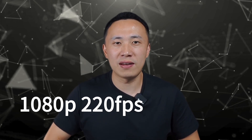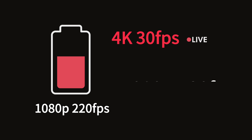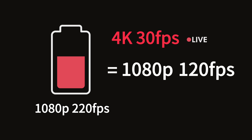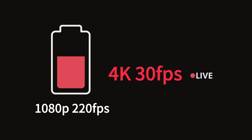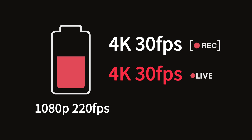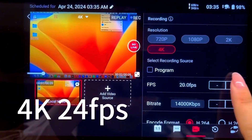Here's the deal: the Ultra's encoding performance maxes out at 1080p 220fps. If you're live streaming in 4K at 30fps, it's essentially like streaming at 1080p 120fps in terms of encoding load. This becomes crucially important when live streaming and recording simultaneously. Streaming in 4K at 30fps while recording at the same resolution doubles your encoding load to 240fps, which exceeds the Ultra's 220fps limit. But there's a workaround: adjust your recording settings to 4K 24fps, and the encoding load for recording drops to 96fps. Combined with the 120fps load from streaming at 4K 30fps, you're well within the Ultra's capabilities at 216fps.